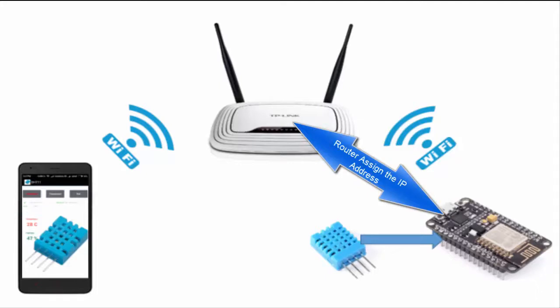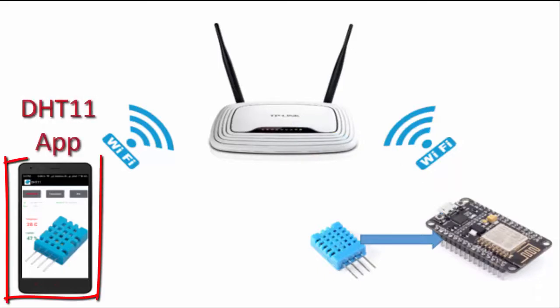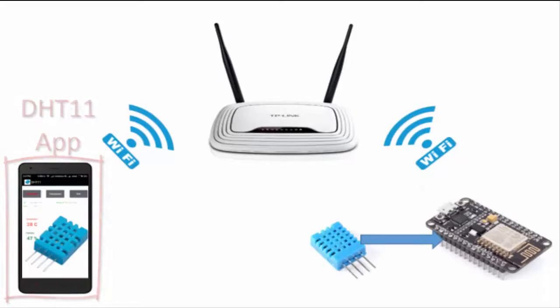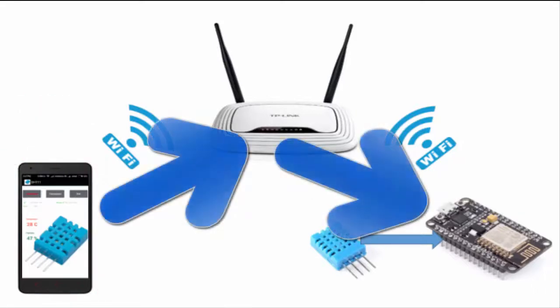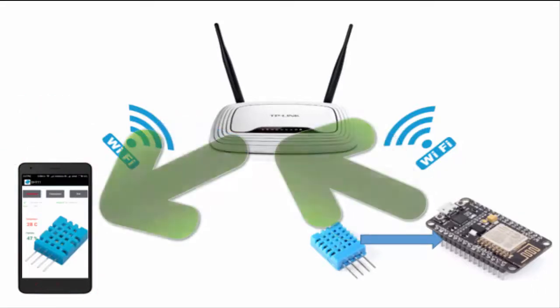Then the DST11 application running on the Android phone will connect with the web server module through the Wi-Fi router and get the temperature and humidity data from the NodeMCU module.